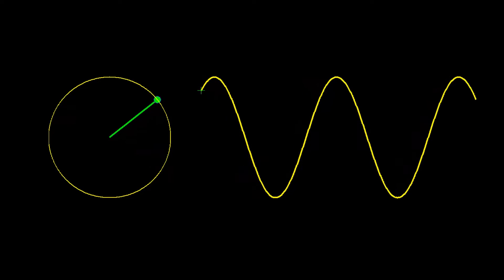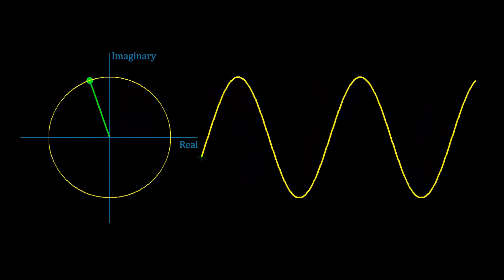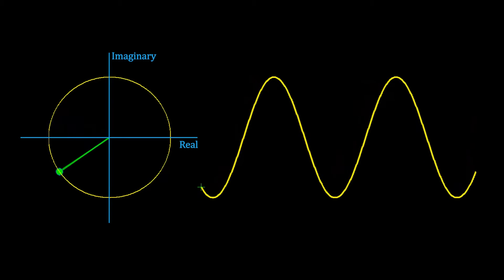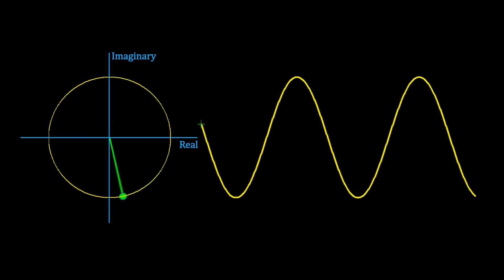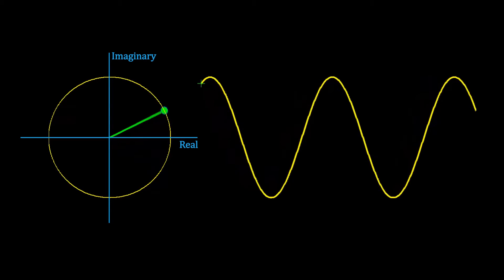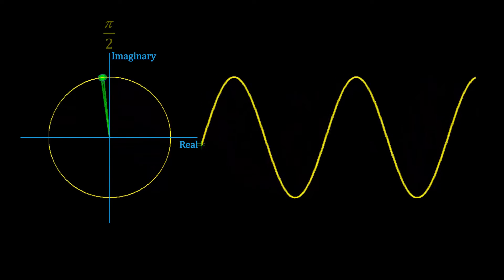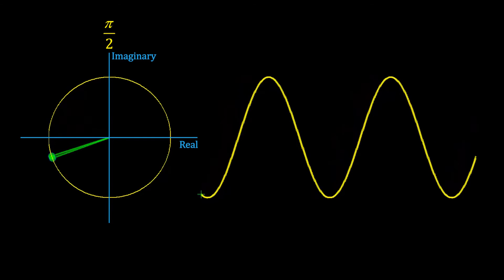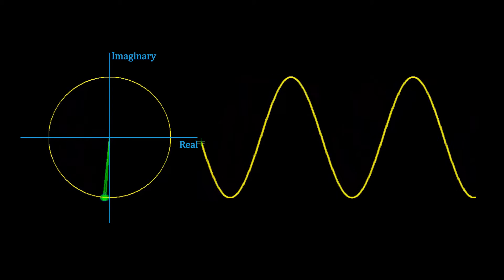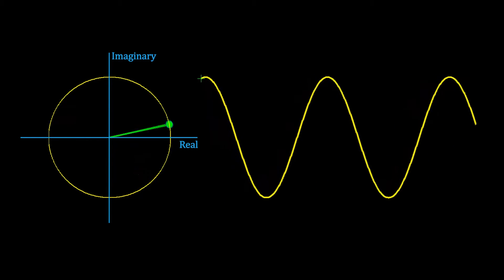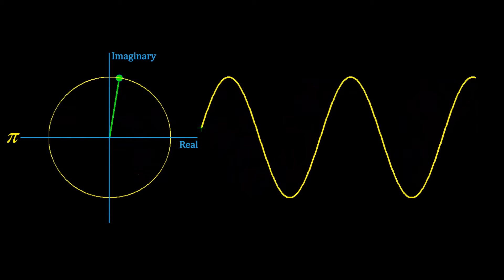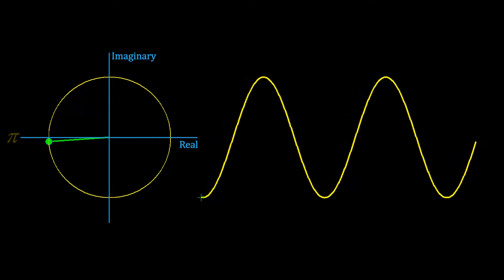A dot moving counterclockwise in a circle generates a cosine function in time when it starts on the positive horizontal axis. The horizontal axis is the real axis and the vertical axis is the imaginary axis — we begin to see the relationship between a complex number moving in a circle (a phasor) and a cosine function. When rotated to π/2, the corresponding complex number is entirely imaginary and the real part is zero, but the cosine continues on. If we threw the function out every time the real part became zero, we would lose information — in an electrical signal that would mean energy would disappear, which is impossible.